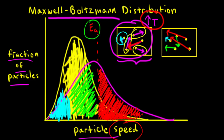It's important to note that since the number of particles hasn't changed — all we've done is increase the temperature — the total area under the curve remains the same. The area under the yellow curve equals the area under the magenta curve. The difference is that the magenta curve is at a higher temperature, and therefore more particles have enough energy to overcome the activation energy. So increasing the temperature increases the rate of reaction.